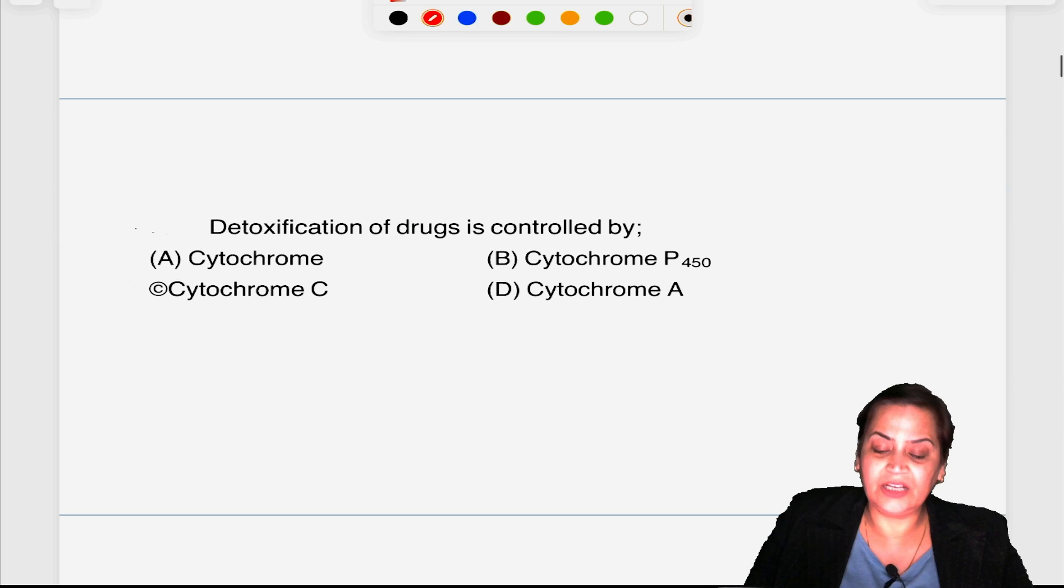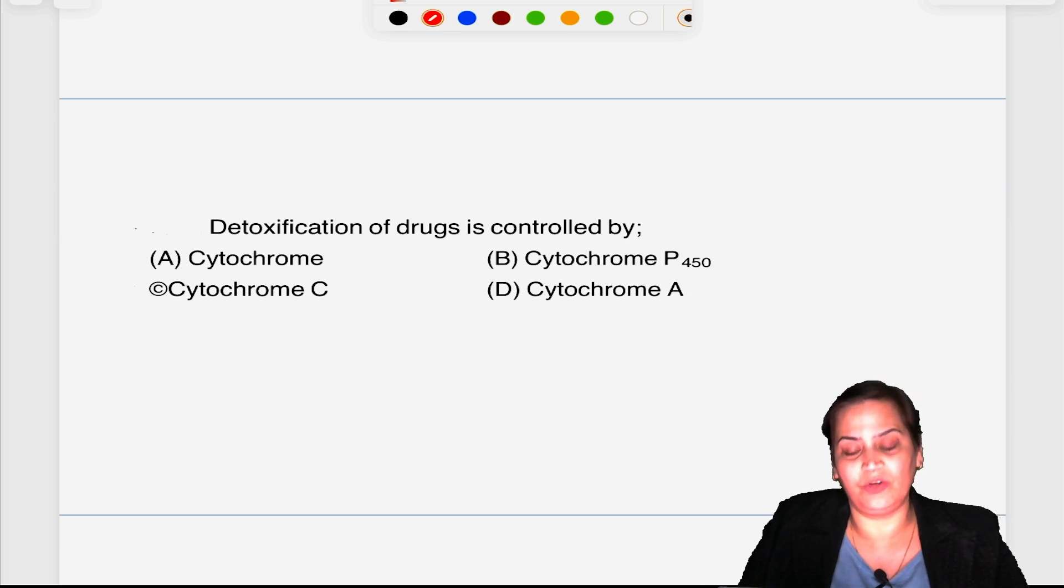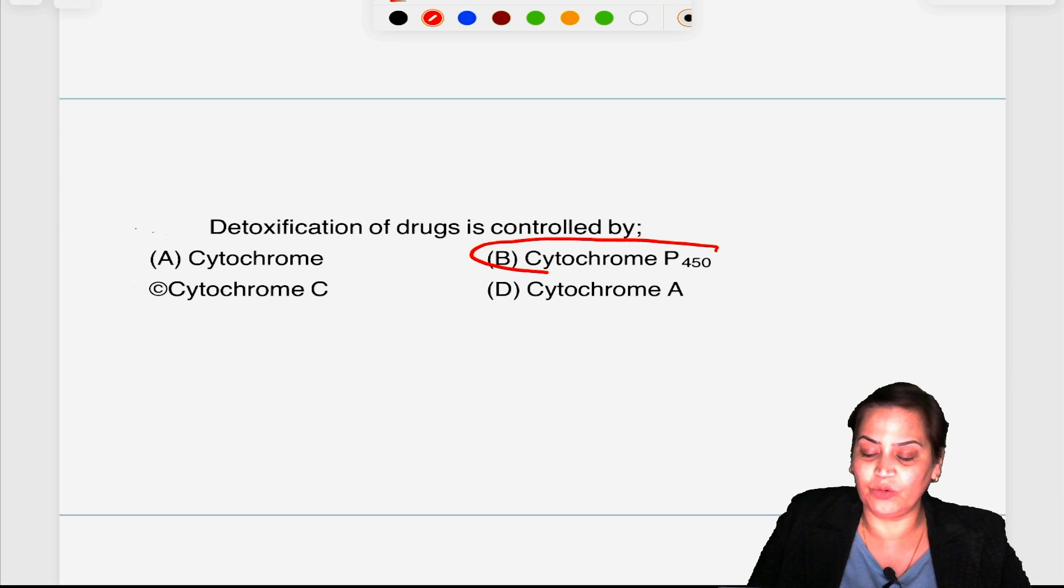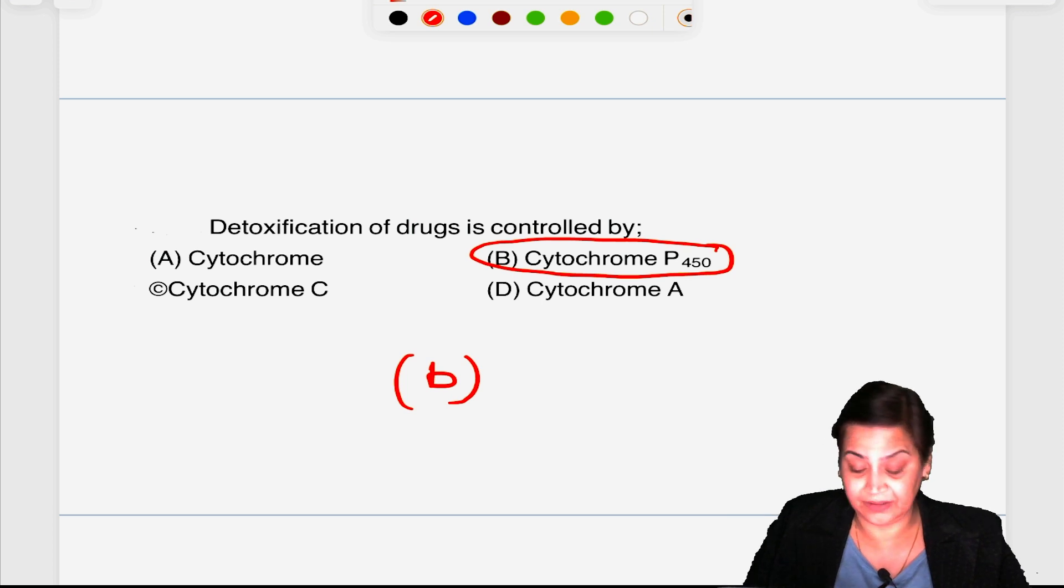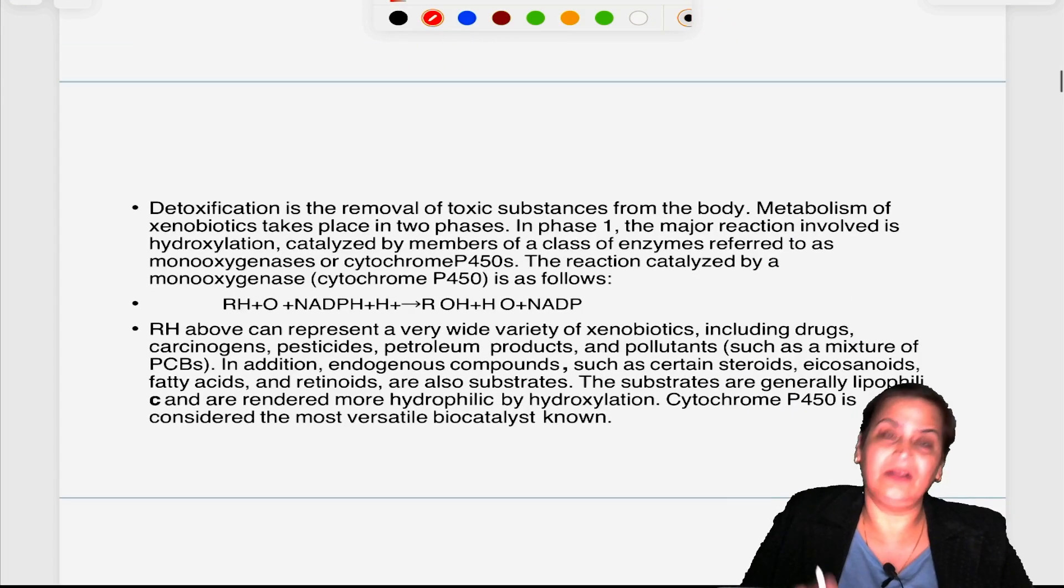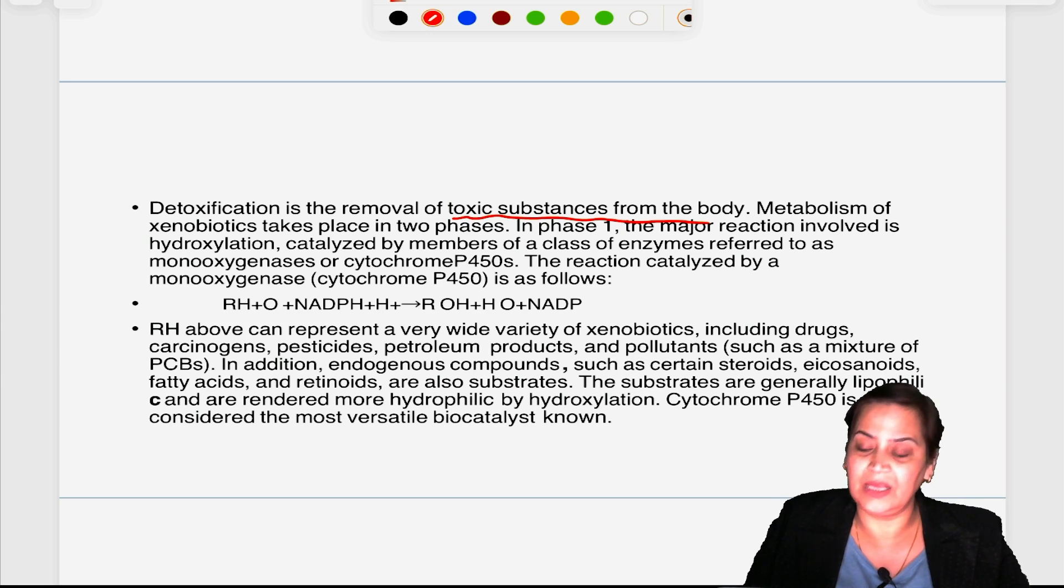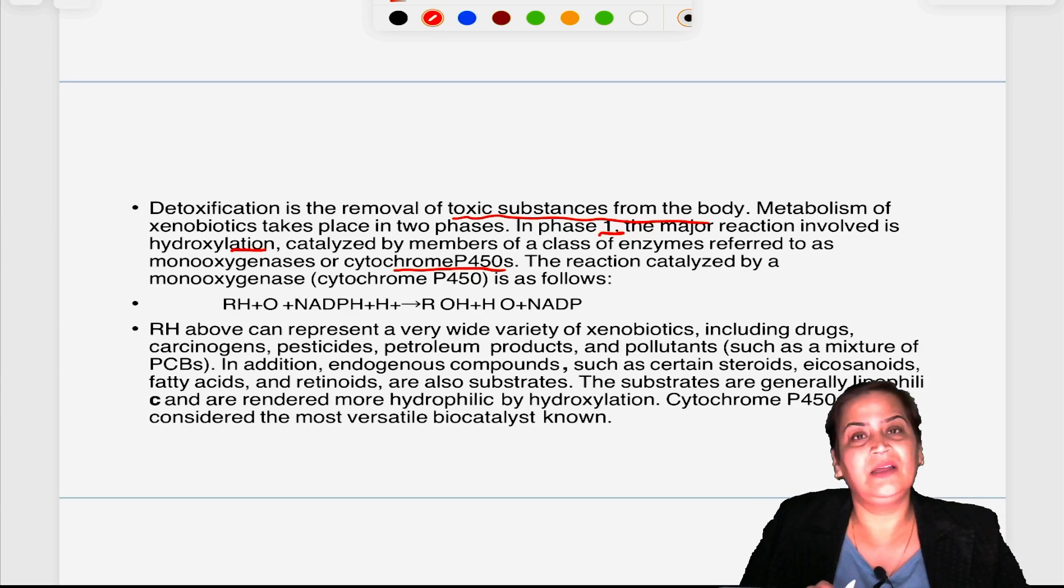Detoxification of drugs is controlled by? It is always cytochrome P450 because it plays a very important role as a detoxifying agent. Detoxification means removal of toxic substances from the body. Metabolism of xenobiotics takes place in two phases. Phase 1: hydroxylation is catalyzed by a member of a class of enzymes referred to as cytochrome P450 or monooxygenase.